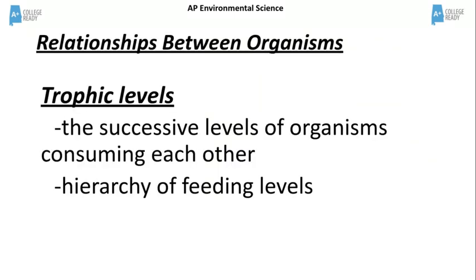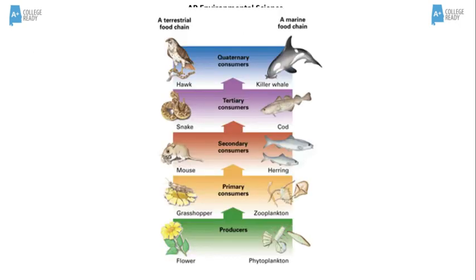Let's now look at relationships between organisms. One concept we must understand is the idea of trophic levels. Trophic levels are defined as the successive levels of organisms consuming each other. It shows the hierarchy of feeding levels. On this slide, we see two food chains — one on the left is a terrestrial food chain, and the one on the right is an aquatic food chain. The food chains show the feeding relationships between the organisms.